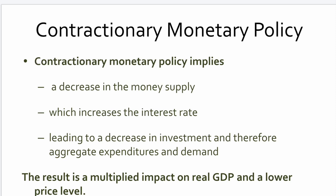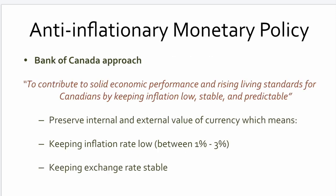A contractionary monetary policy, on the other hand, decreases the money supply, which increases the interest rate and leads to a decrease in investment, and therefore aggregate expenditures tend to drop. The result is a multiplying impact on real GDP toward a lower price level — the multiplier effect works in reverse and slows down the economy.